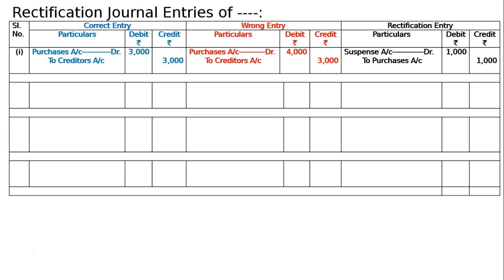The second entry: installation charges on new machinery purchased of five hundred rupees were debited to sundry expenses account. The correct entry for installation charges is always capital expenditure — machinery account debited to cash account five hundred.